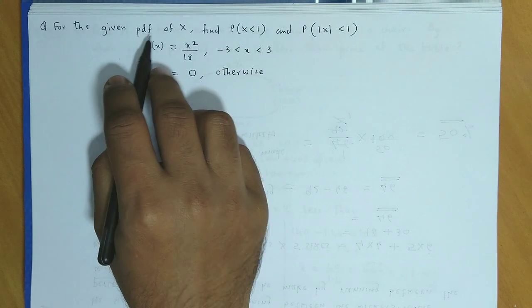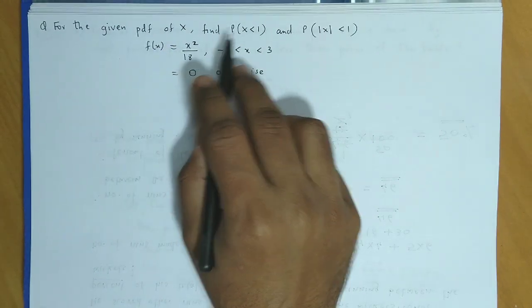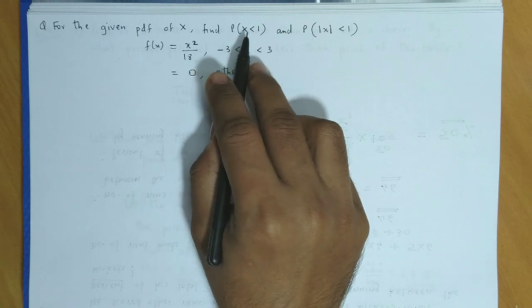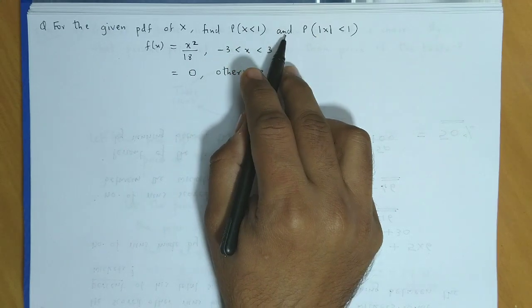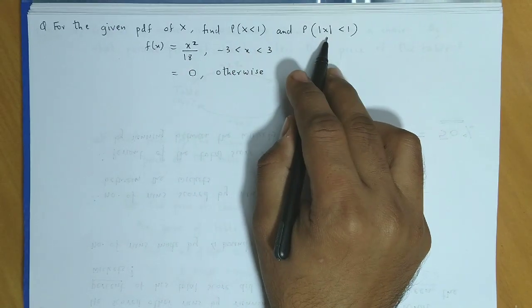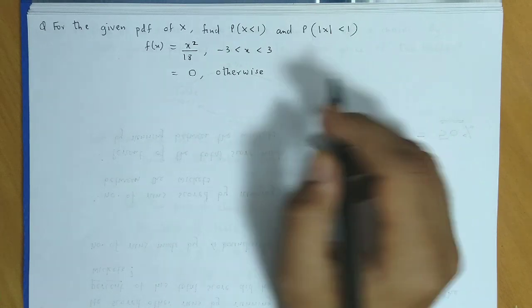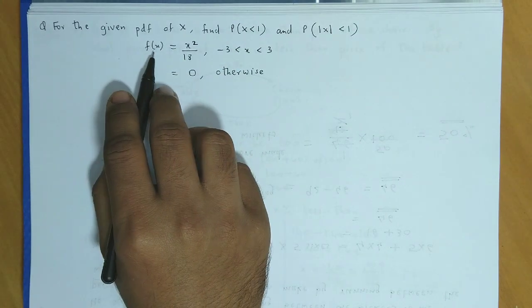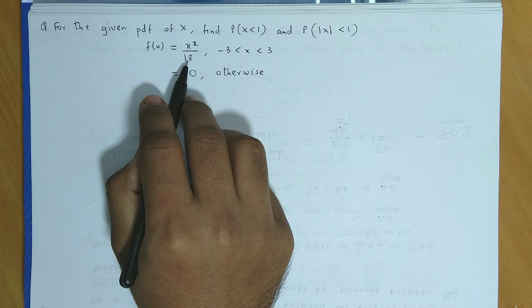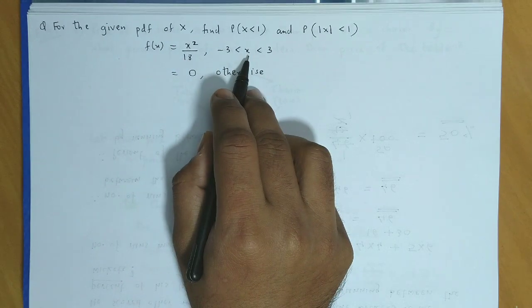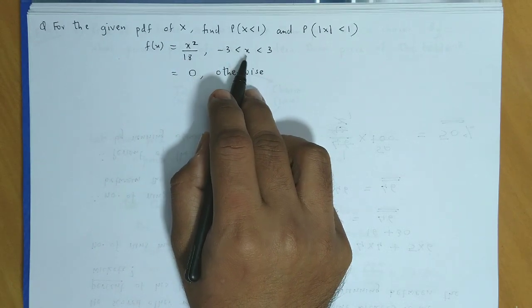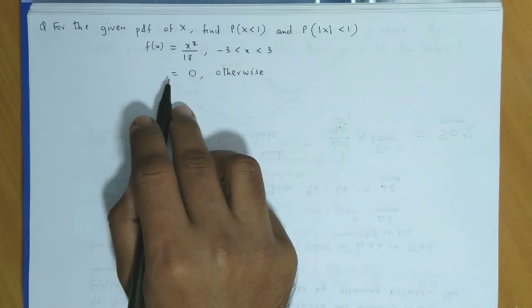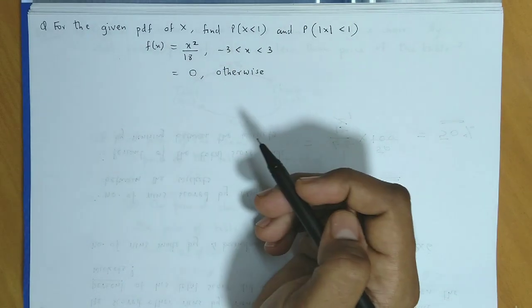For the given PDF of X, find probability for X less than 1 and probability when mod of X is less than 1. Here the probability function is x² by 18 and the range of X lies between minus 3 and 3, and it is equal to 0 otherwise.